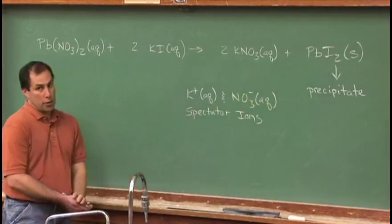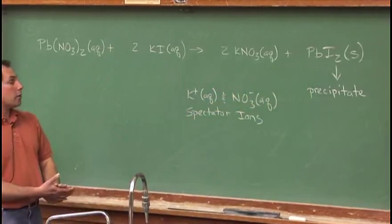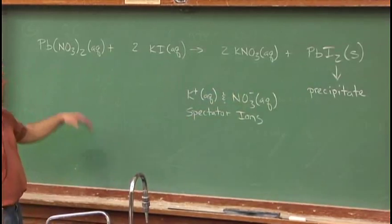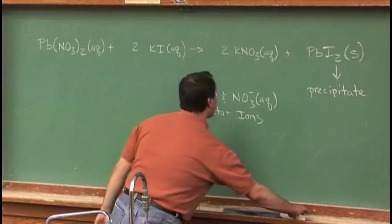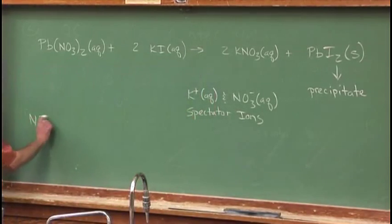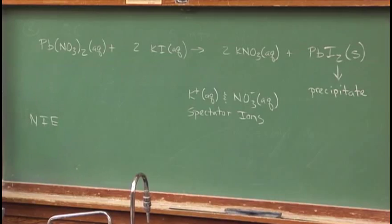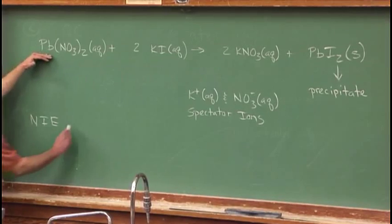Our net ionic equation, meaning do not include the spectator ions, does not involve nitrate or potassium plus. So the net ionic equation, or NIE, contains lead 2 plus.